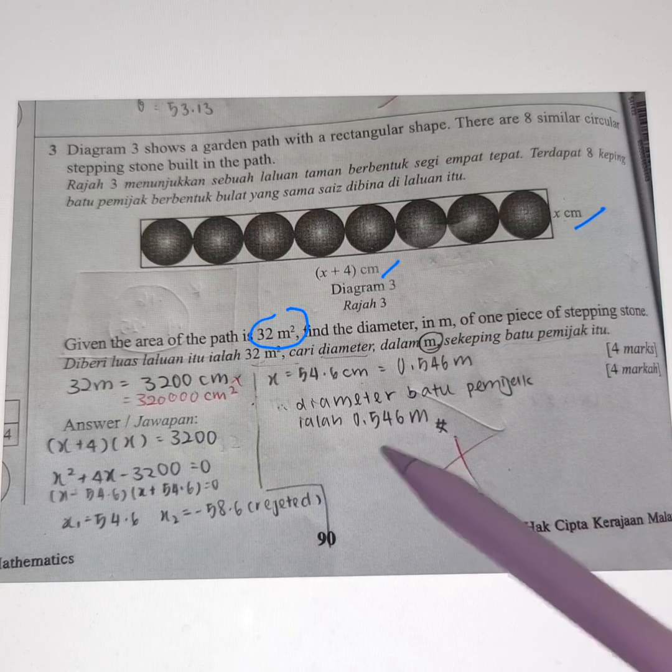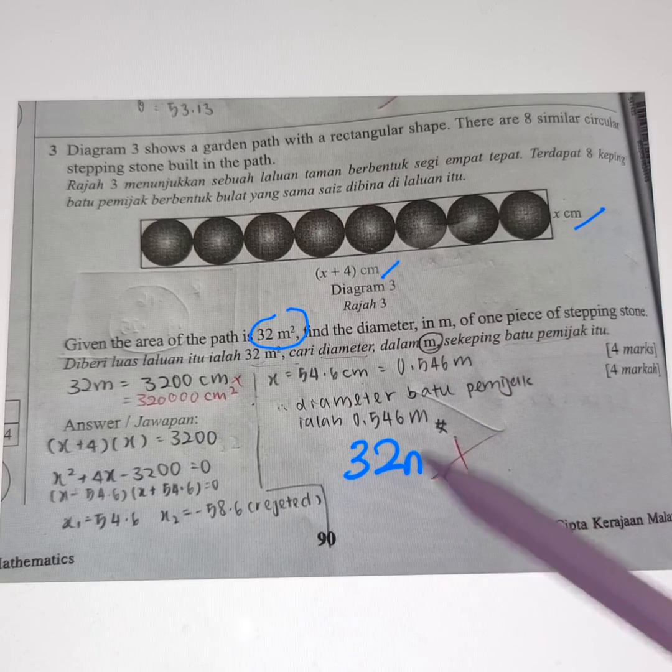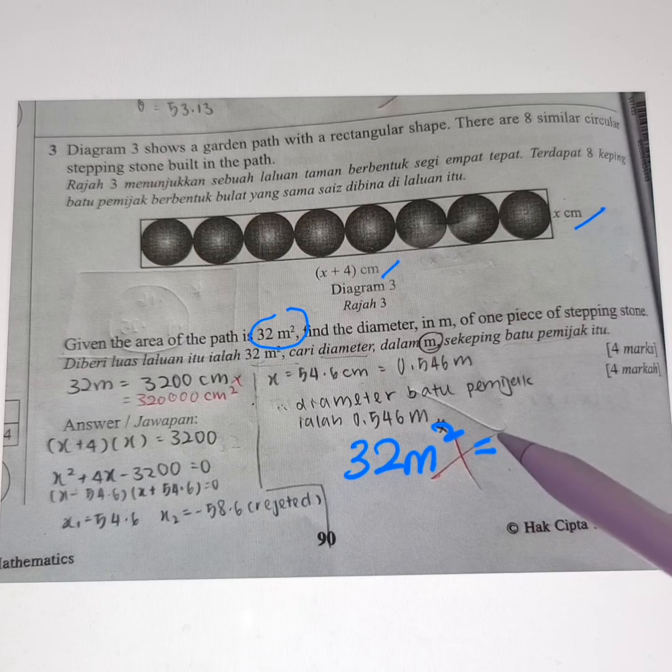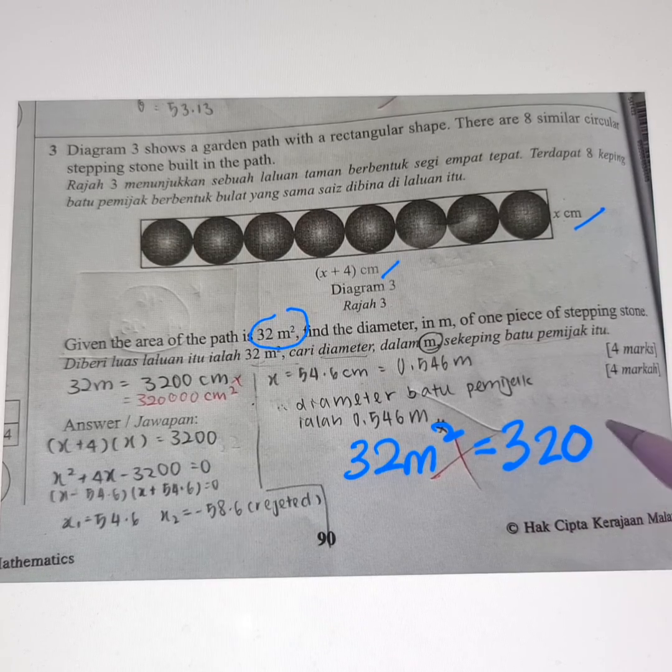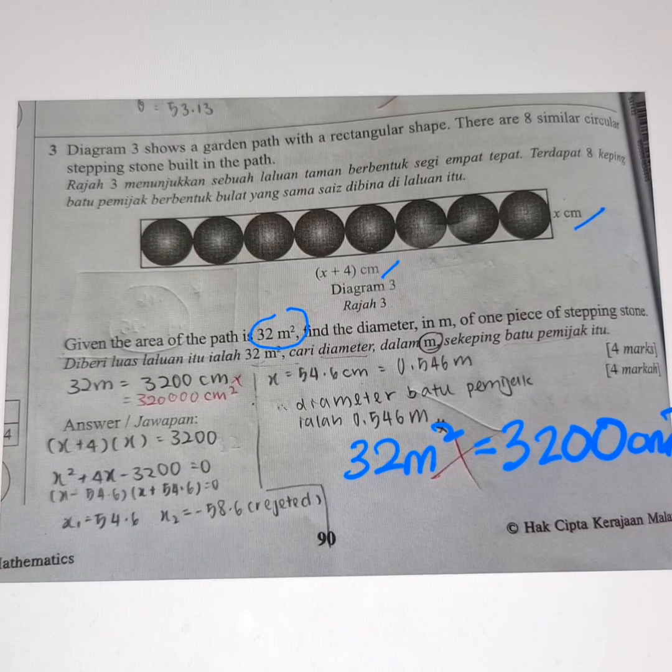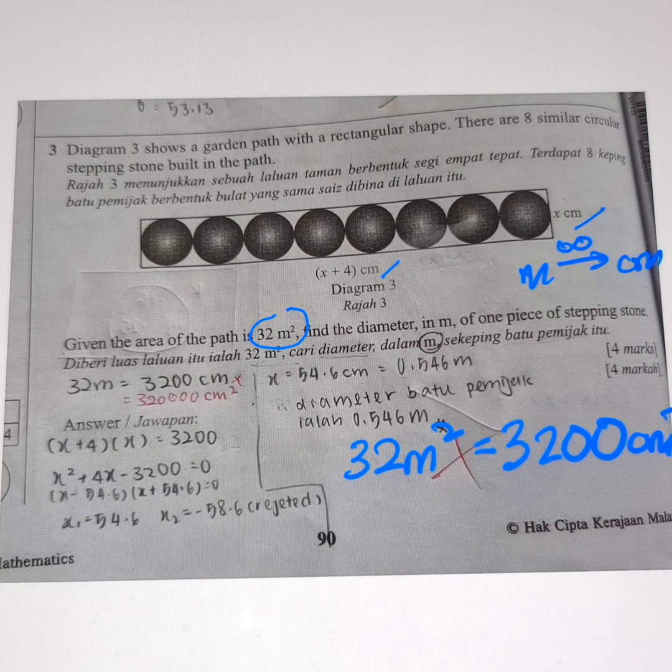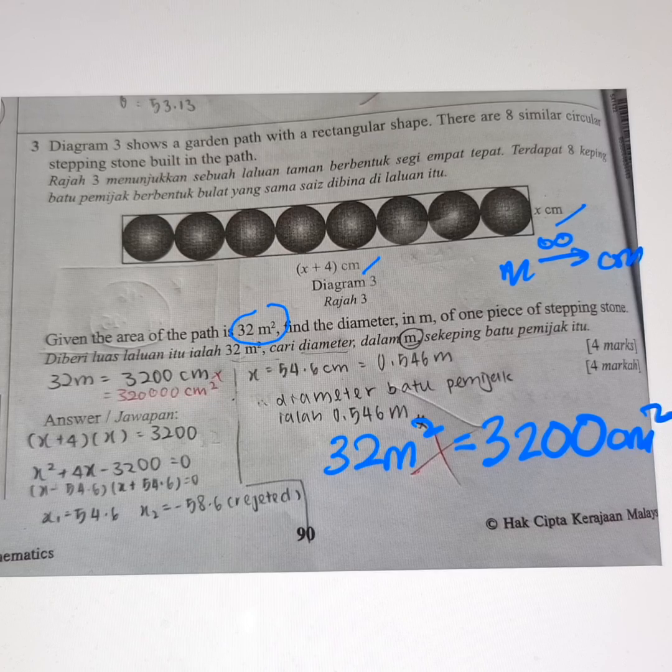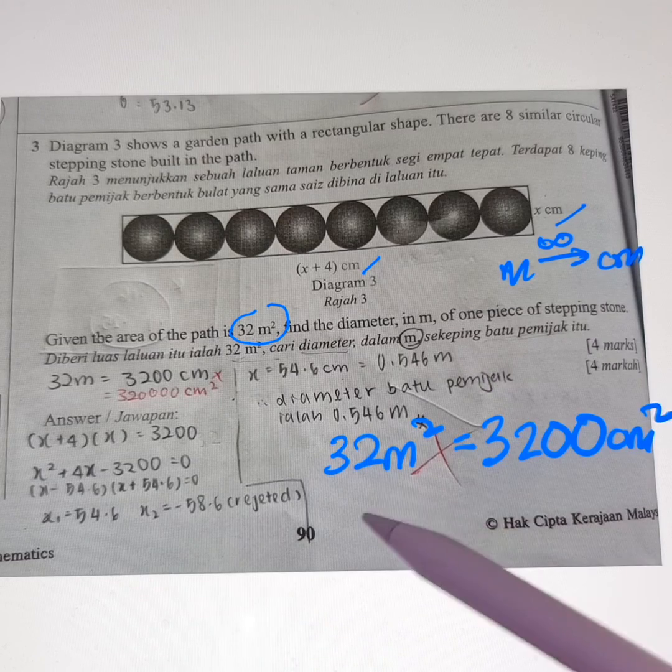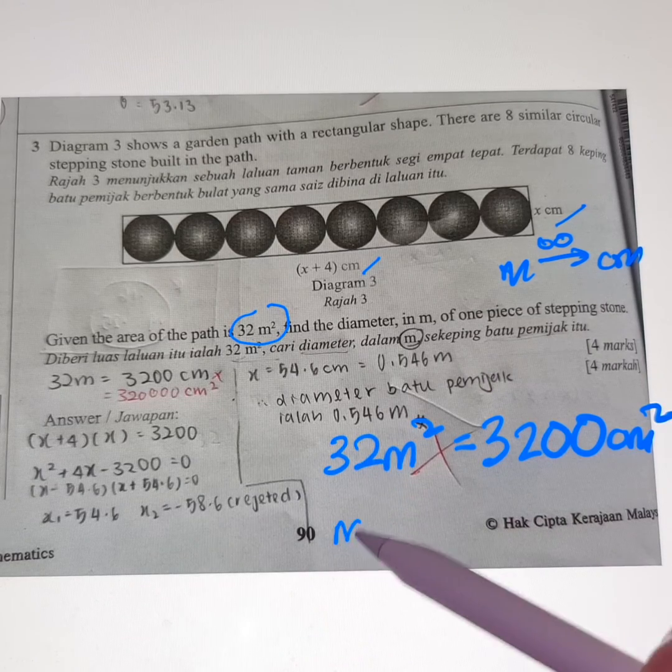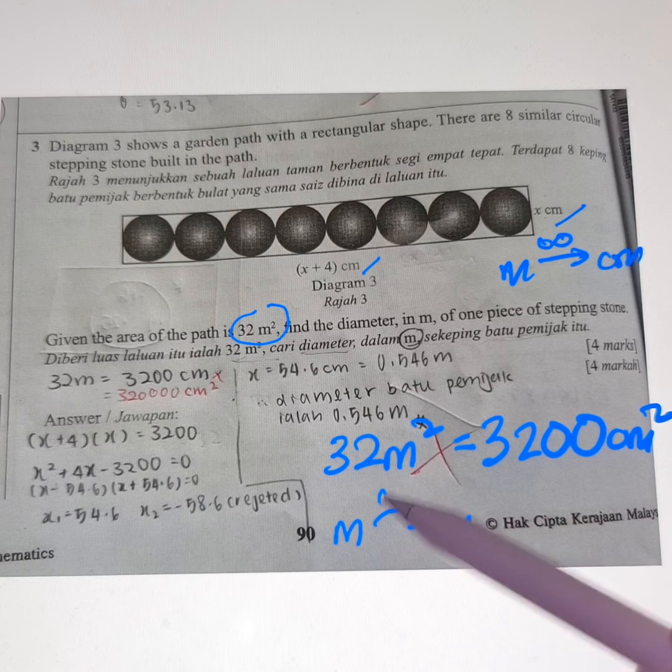Everyone see this 32 meter square? There is student writing 3200 cm square. Because it says meter to cm 100. I'm like wait, wait, wait a minute. No, you should know this. You see meter to cm 100.